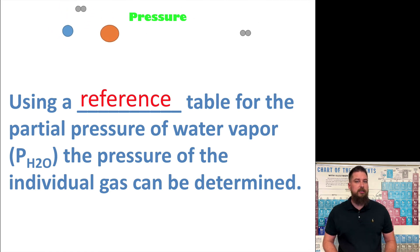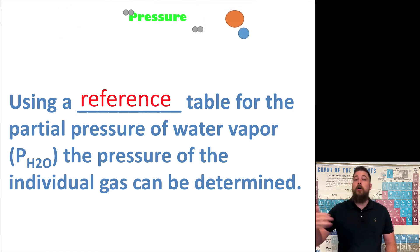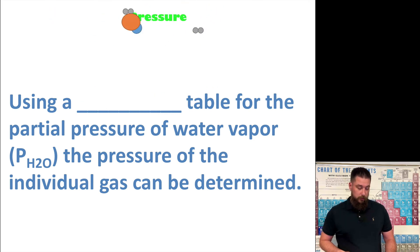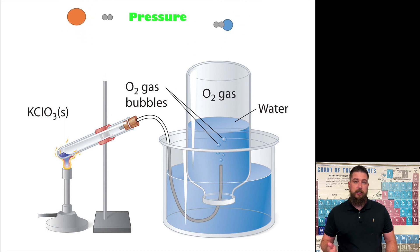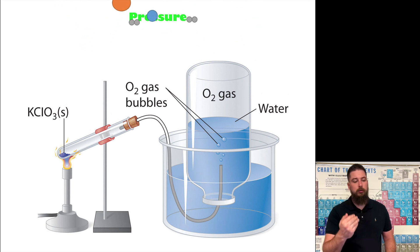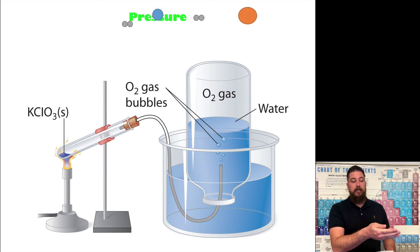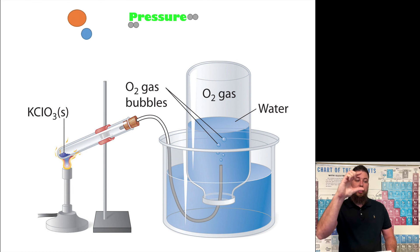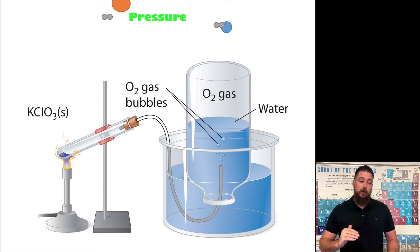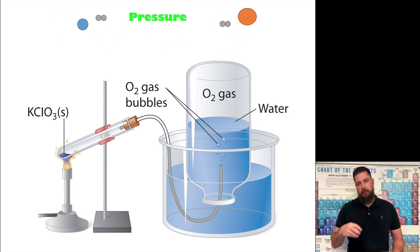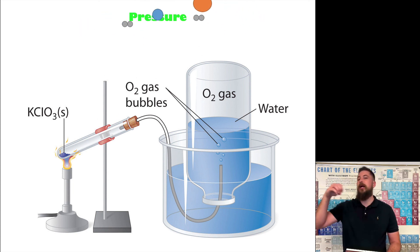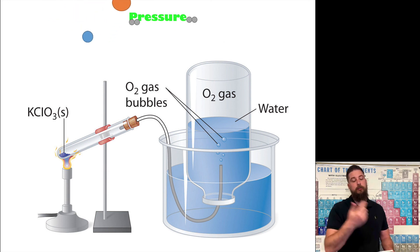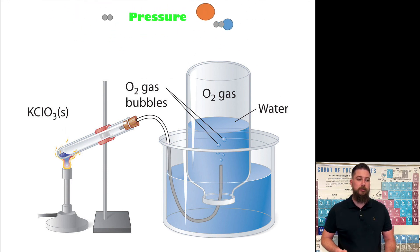These problems are very easy and very straightforward. Again, the sum of all of the partial pressures adds up to the total pressure. The bigger concept to understand is that as the chemical reaction occurs, it collects the gas inside the container by displacing the water. However, there is some water vapor in the container as well, and we have to subtract the pressure of the water vapor from the total pressure to figure out the pressure of the gas. We'll go through example problems.